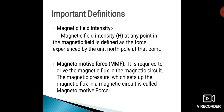The next definition is magnetic field intensity. The strength of a magnetic field, or the force experienced by the north pole of a magnet, is called magnetic field intensity. The field intensity H at any point in the magnetic field is defined as the force experienced by a unit north pole at that point.